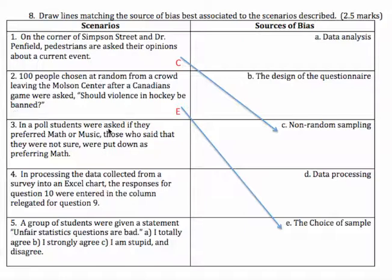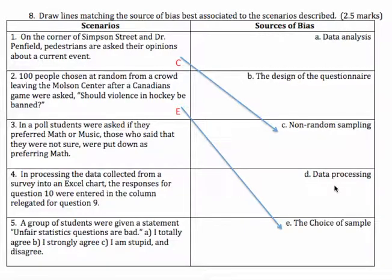Number three: in a poll, students were asked if they preferred math or music. Those who said they were not sure were put down as preferring math. Is this data analysis? The design of the questionnaire seems fine. Data processing is when you're just crunching the numbers and an error is made — but this isn't an error, it's a choice that was actually made. So it's just poor data analysis. Number three is A.